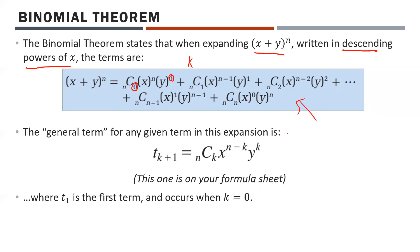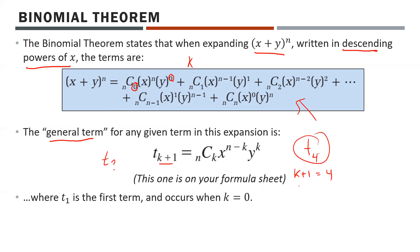The full expansion formula is not on your formula sheet, but what is on it is the general term: t_(k+1) = nCk · x^(n-k) · y^k. This means that to find term whatever, where 'whatever' is k+1, you just solve for k. For instance, if we want term 4, then k+1 = 4, so k must equal 3.